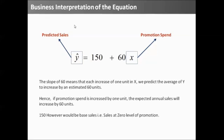So, if I spend 1, let's say the unit is thousand dollars, if I spend 1,000 dollars, I would get 60 thousand dollars in sales. Unit is very important. Based on unit, you interpret it. I would say that 150 would be the sales while I spend 0 dollars on promotion.